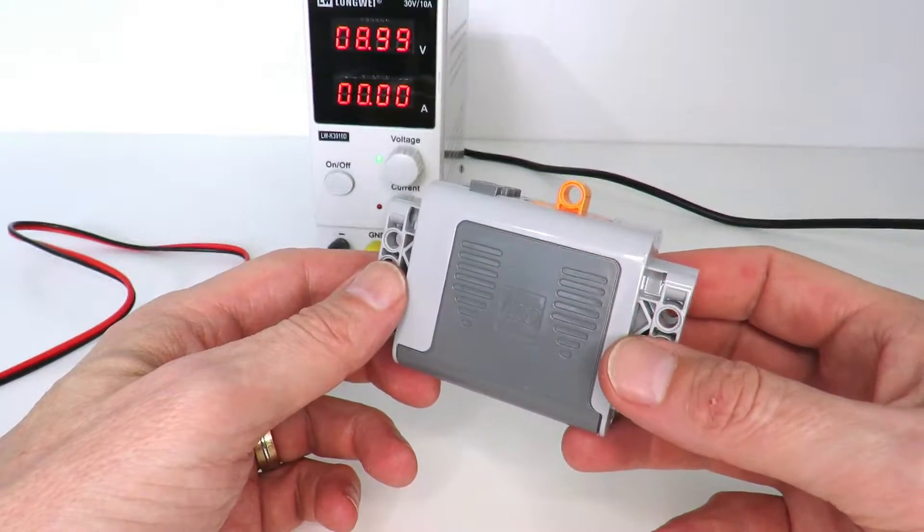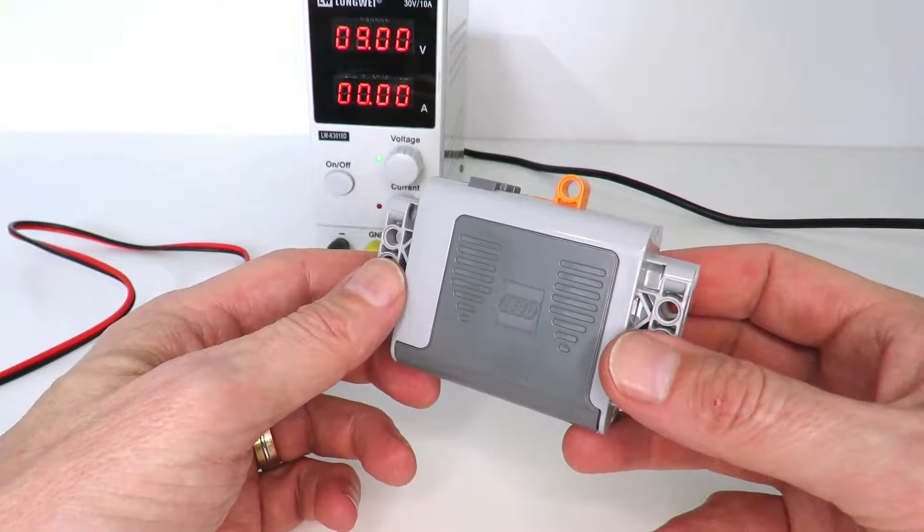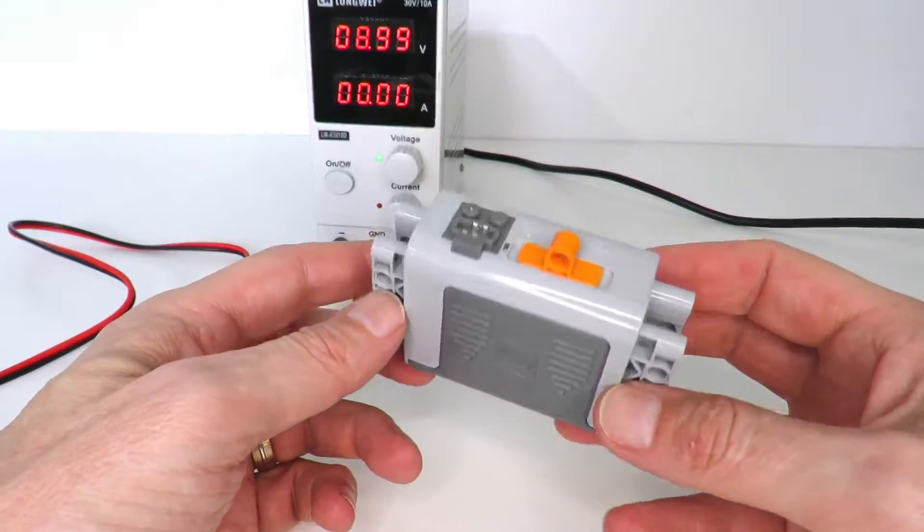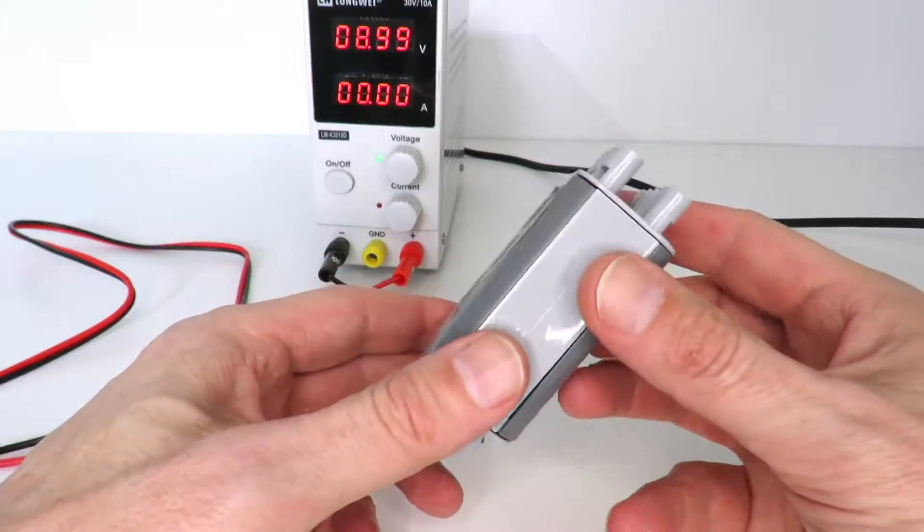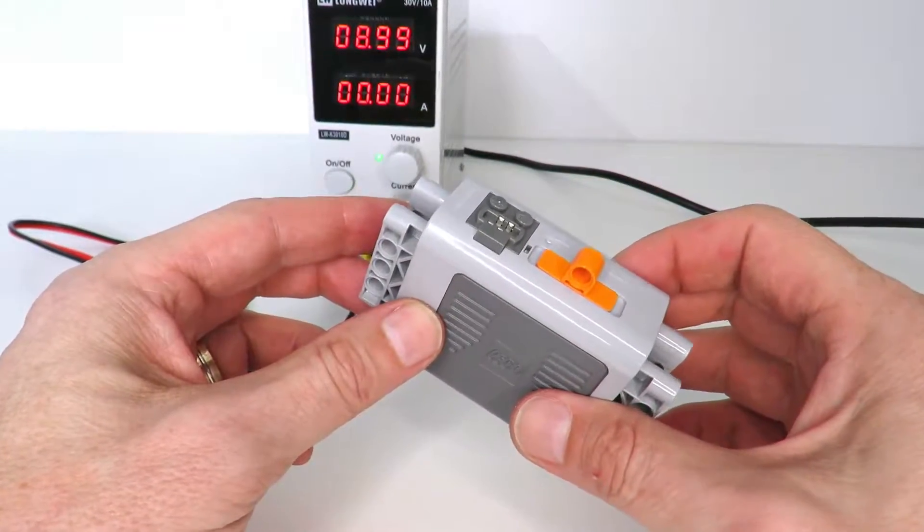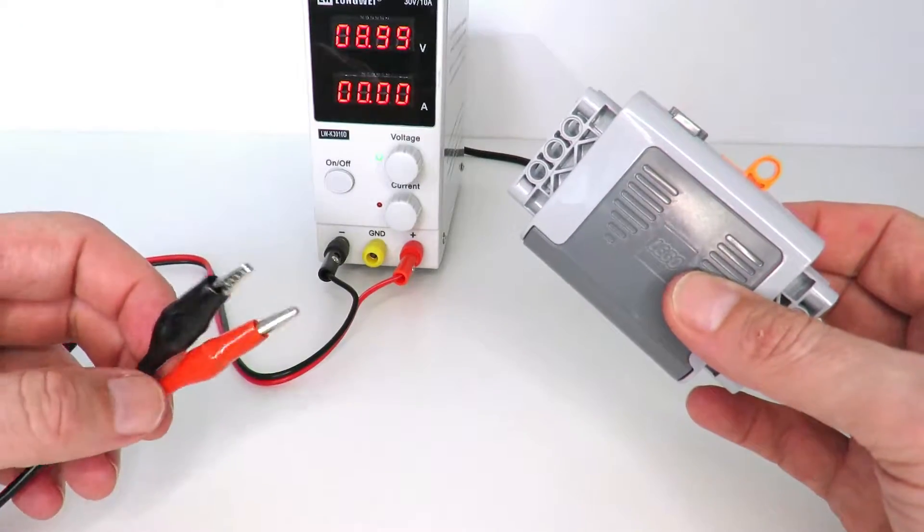If you play around a lot with your Lego like I do, you can run out of batteries pretty quickly, especially if you're doing a lot of power lifting and other power functions. So what I'm going to show you is how to change this power pack so you can connect it directly to a nine volt power supply like this one.